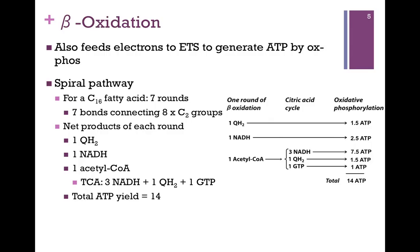What kind of energy yield do we get out of this? It is a spiral pathway. For 16-carbon fatty acids such as palmitate, we have eight C2 groups — eight groups that could be converted to acetyl-CoA — and seven bonds connecting them. So that means we'll need seven rounds of beta-oxidation. The net products of each round are one molecule of QH2 produced in step one and one molecule of NADH produced in step three. We also have our product of one round: one acetyl-CoA. And remember, we can send that through the citric acid cycle.